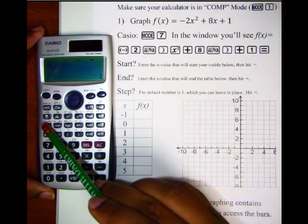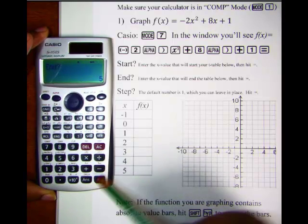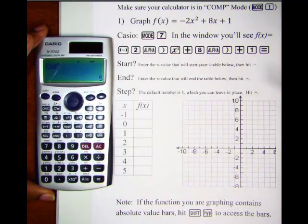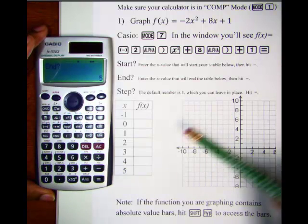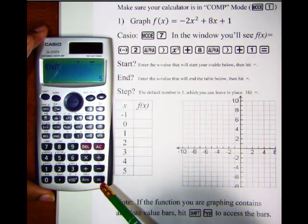We'll tell it negative 1 and then hit equals and then it's going to ask where do you want the t-table to end. And we want our t-table to end at 5 and 5 just happens to already be on the screen.